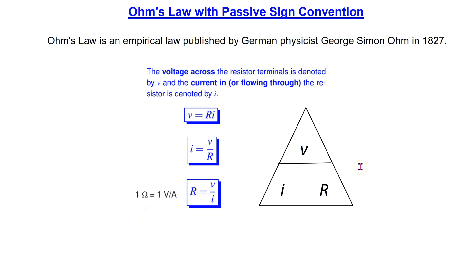You might be familiar with this Ohm's law image mnemonic from high school physics. Covering the unknown variable gives the Ohm's law formula in terms of the remaining parameters. For instance, if we cover V then V is R times I; if we cover I then I is V over R; and if we cover R then R is V divided by I.